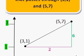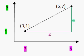Here's a picture of what we're talking about. Here's our line, it passes through the two coordinates we just had in the question, 5,7 and 3,1.